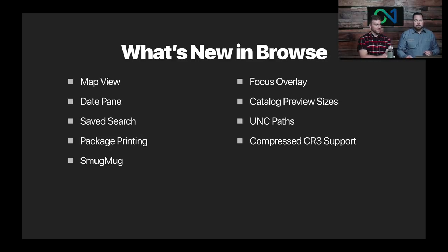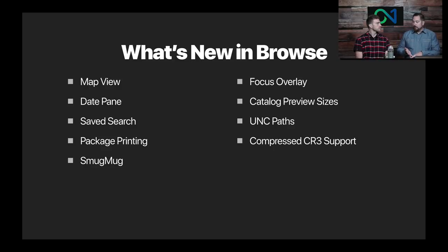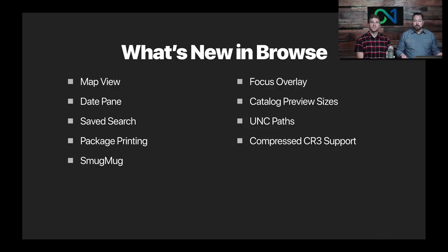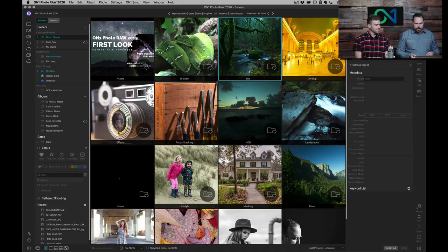That's the performance overview — you'll see some of it as we work through the demo. Let's talk about what's new in Browse. We added a ton of new features: a new map view, a date pane that makes it easy to find photos by date, improved search with saved search, a new printing dialog for package printing and contact sheets, SmugMug publishing, and a new focus overlay. The app also looks a little different from the previous version — a shiny new interface, more modern and flat, with a new font that's easier to read at small sizes.